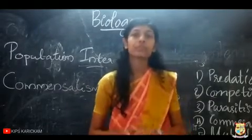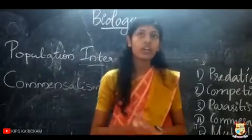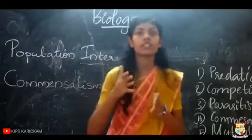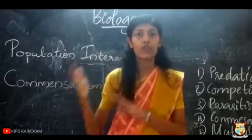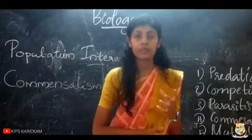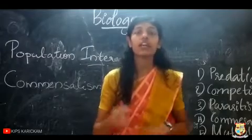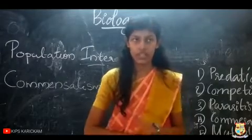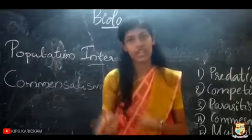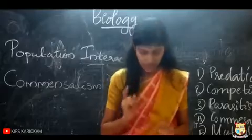Another example is the interaction between a fig tree and a wasp. The fig tree gives shelter or a place for the wasp to live in. The wasp comes and lays eggs in the fig tree and produces its young. In turn, the wasp helps the pollination of the fig tree, because when it goes and sits on another fig tree, pollination happens. So here both are equally benefited.